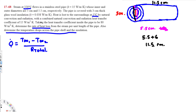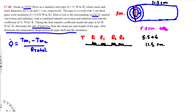Starting from inside: steam is flowing through the inside so we have convection — that's the inside resistance R_inside. Then we have the steel layer giving resistance R1. Then outside we have glass insulation giving conduction resistance R2. Finally, outside we have the surroundings — that's outside convection resistance R_outside. So we have R_inside, R1, R2, and R_outside in series between T_inside and T_outside.